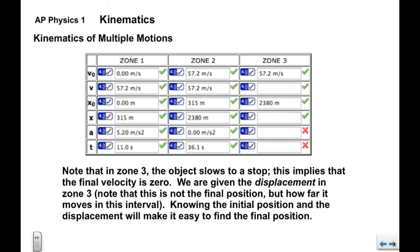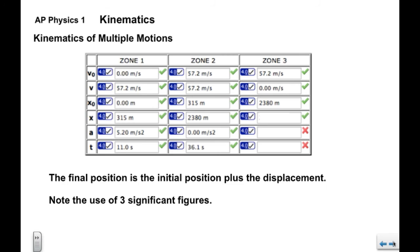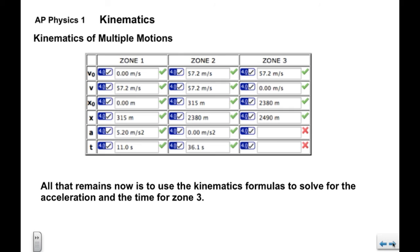It implies that the final velocity is zero. We're also given the displacement in Zone 3. Note that this is not the final position, but how far it moves in the interval. So knowing the initial position and the displacement, we can find the final position, which ends up being 2,490 meters. All that's left now is to apply the kinematics formulas to solve for the acceleration and the time interval for Zone 3. And again, we know how to do that already.